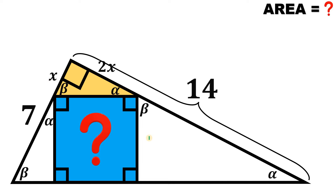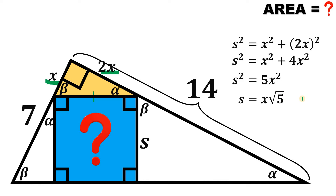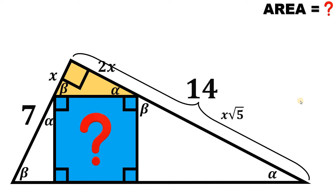Let s be the side of this square, so all sides equal s. Using the Pythagorean theorem, we get s squared equals x squared plus (2x) squared. Simplifying: x squared plus 4x squared gives 5x squared. Taking the square root on both sides, we get s equals x times the square root of 5. So the side of this square is simply equal to x times square root of 5.